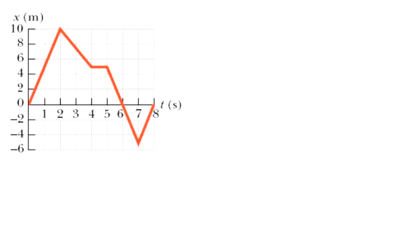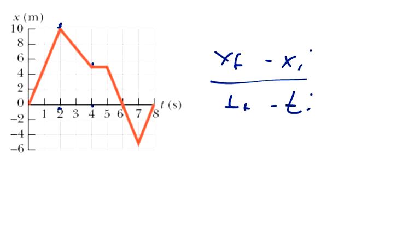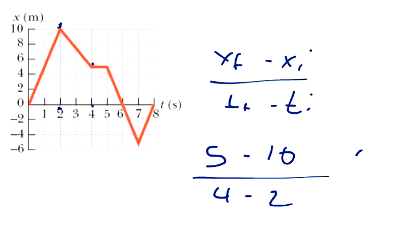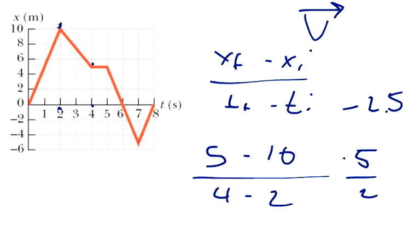Now we move on to from two seconds to four seconds, and that means I'm going from here to here. Here's where we get interesting. My x-final minus my x-initial over my time final minus time initial. My x-final is five, my x-initial is ten. So I'm going to have a negative number here. My time final was four, my time initial was two. So I'm going to have negative five over two — that's negative 2.5 meters per second. The reason we say that velocity is a vector quantity is because it shows direction — whether it's going up or down, left or right. In this case, we're saying it's going down, a negative quantity.